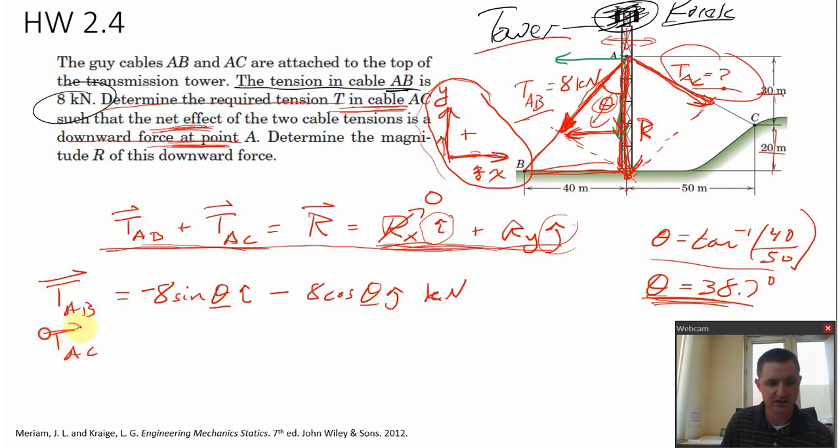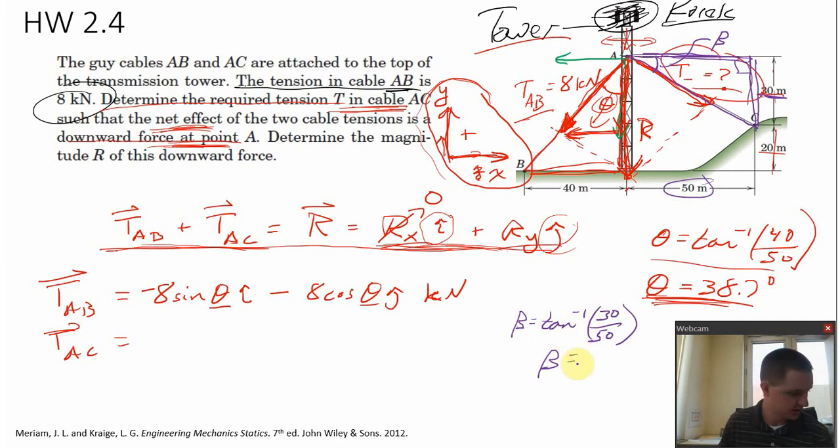So now let's define tension vector TAC. Well TAC, I need to define another angle here. In this case, I'll define this angle right here. Let's call that angle beta. So I can find angle beta by doing arctan. Here's a right triangle that goes from A to C and then up vertically and then over. So here's the right triangle. Here's the right angle. This length is 30. And this length here is 50. So to define this angle beta, opposite over adjacent, tan inverse of 30 over 50. And that gives us an angle of 30.96 degrees. So now I've defined angle beta.